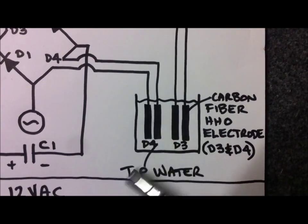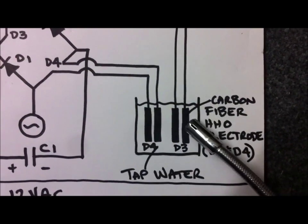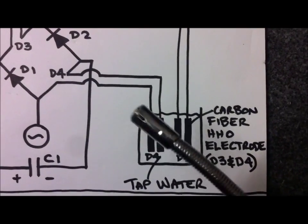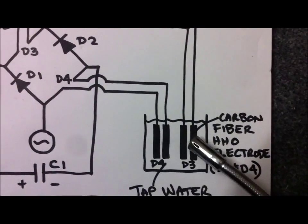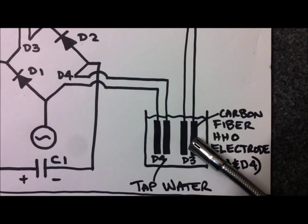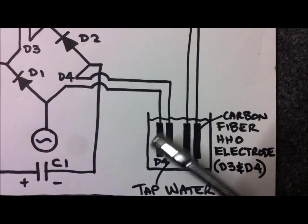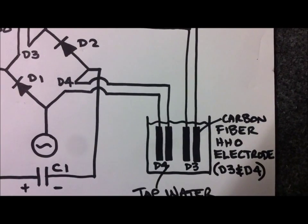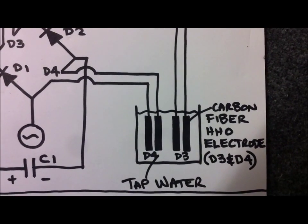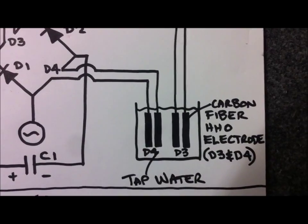So on every rectified pulse, the positive and the negative peaks, we're producing HHO and they're alternating at 50 Hz. So 100 cycles per second and that's how we're producing our HHO. I've tested that theory and that's definitely what's happening.